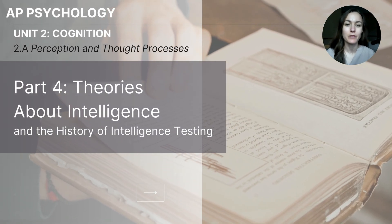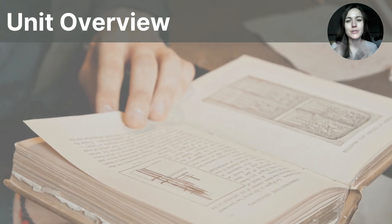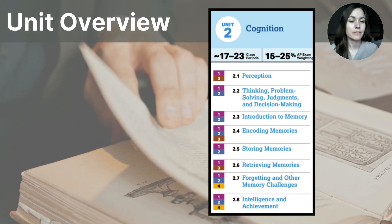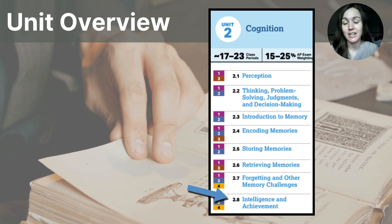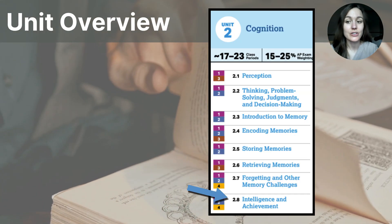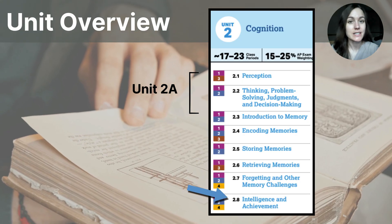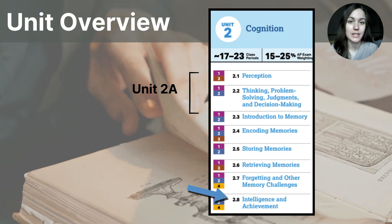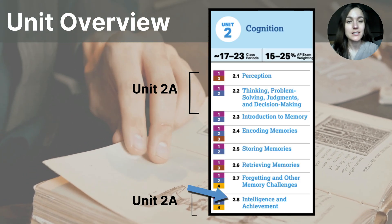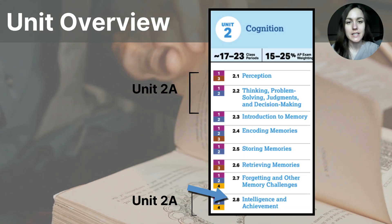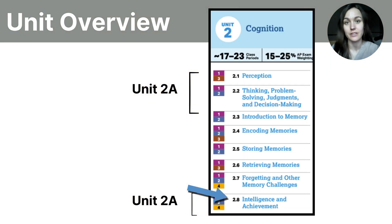Hi everyone, this video is part four of the 2A series on perception and thought processes. Our arrow is down at the bottom of the unit content list. So far in this series, you should have watched parts one through three, which covered the topics in the CED related to perception and thinking and problem solving. Now we are beginning the topic of intelligence, and this is going to take up two videos. Today's video will cover theories of intelligence and the history of intelligence testing.